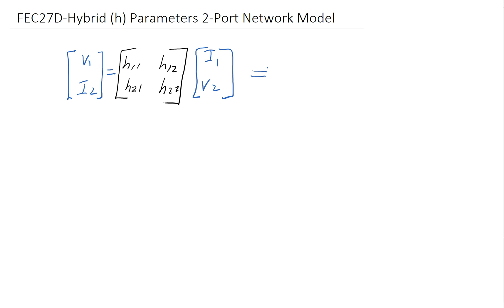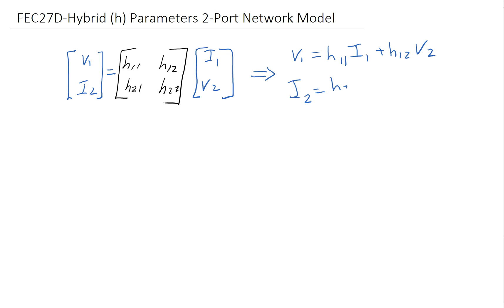Applying matrix multiplication gives us a couple of equations. The top equation is V1 equals H11·I1 plus H12·V2. The second equation gives I2 equals H21·I1 plus H22·V2. We can use these two equations to figure out what each of the parameters are.